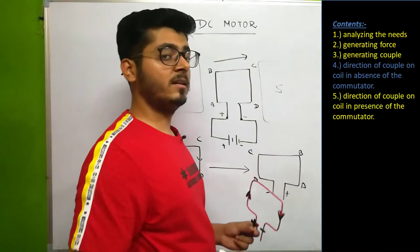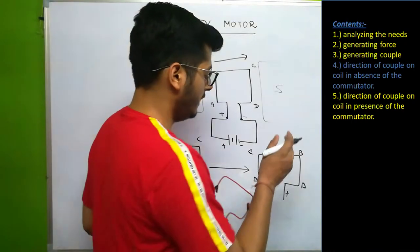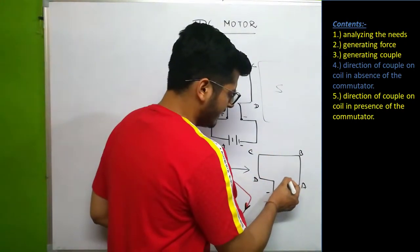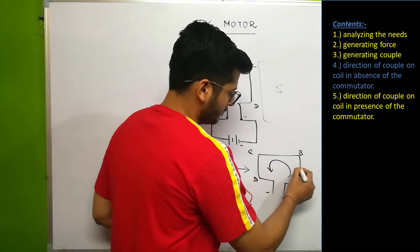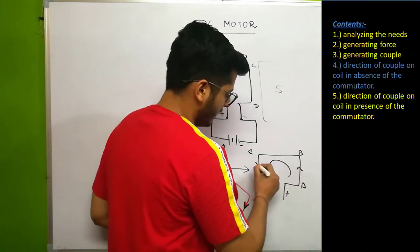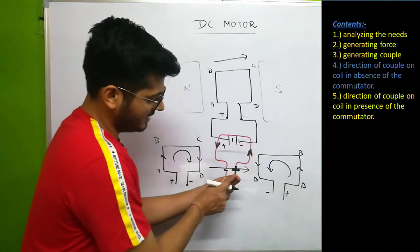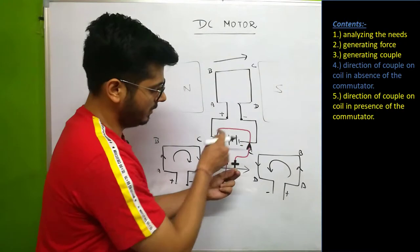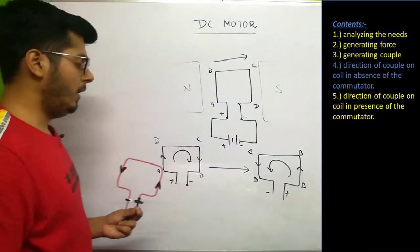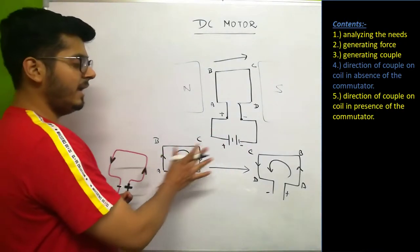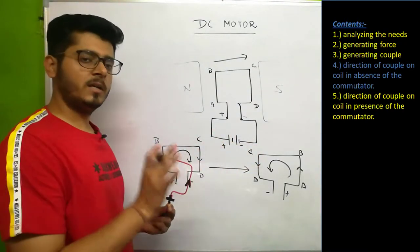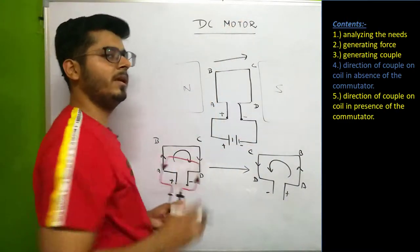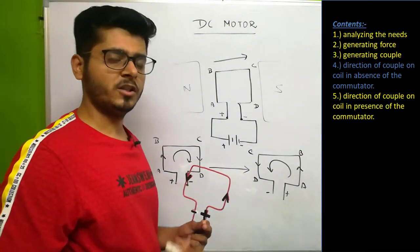Now let's look at the direction of current in the second case — after 180 degrees of rotation. In the second case, the current is in the opposite direction: from positive to negative. Let's check whether the direction of couple is the same in both cases and whether the body completes one full rotation.